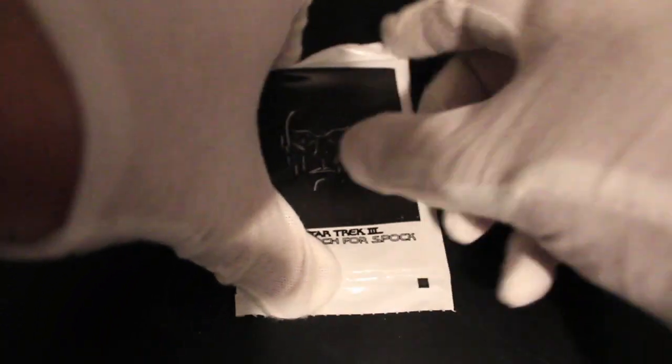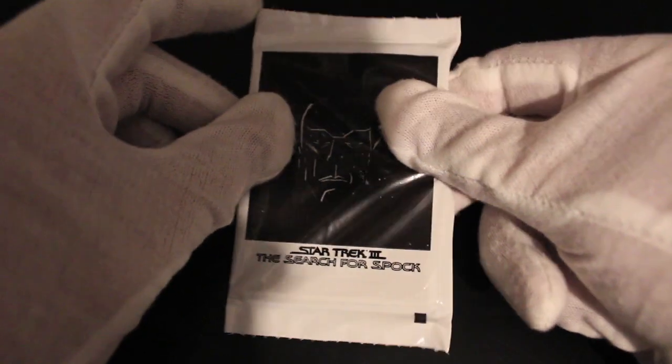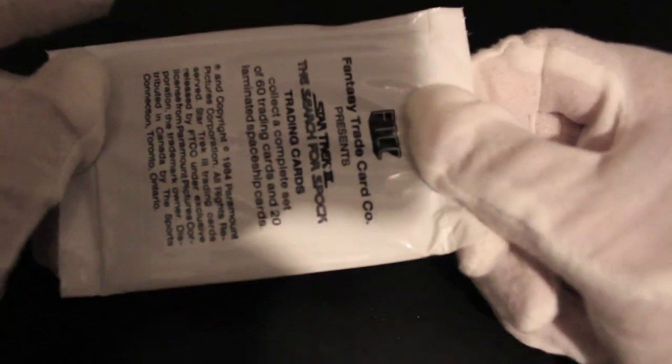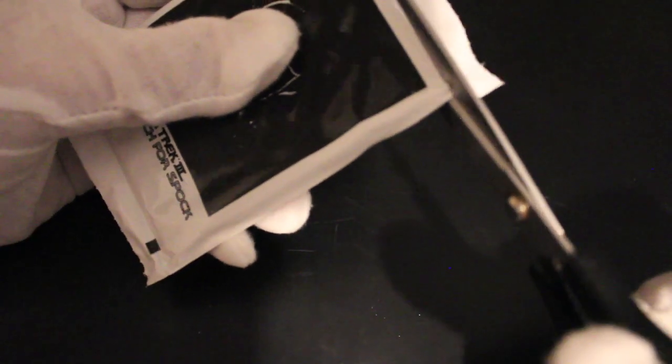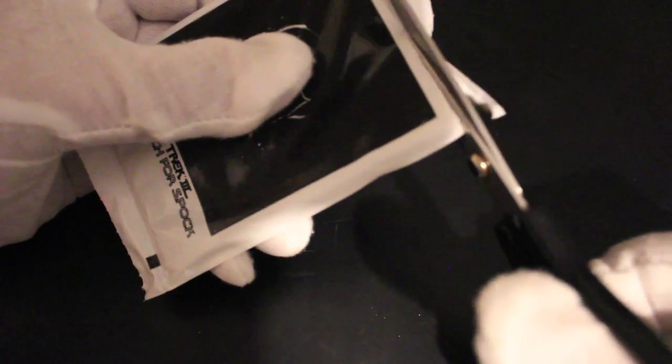Hello, it's me Trading Card Tony with another pack. We've got Search for Spock, Star Trek 3. There he is on front. How are we going to get in these, do you think? Shall we cut it? Might be a cutter. I don't want to tear the card, so let's just cut straight into this.